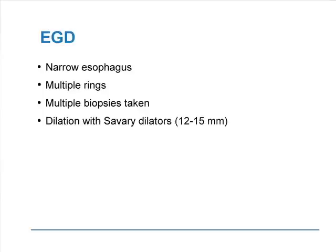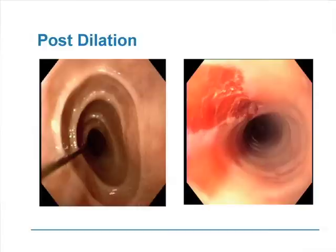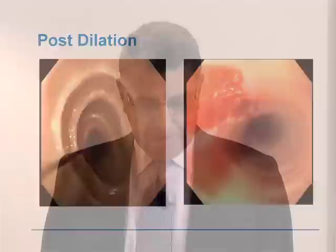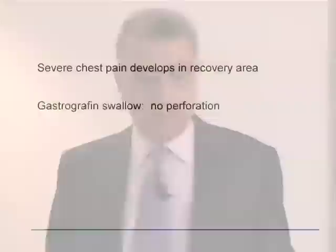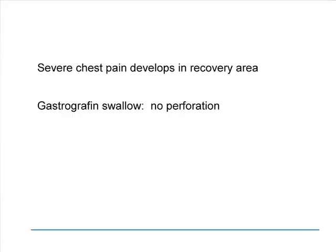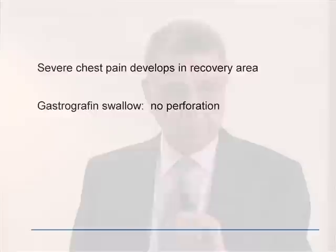Multiple biopsies are taken and the esophagus is dilated using Savary dilators from 12 to 15 millimeters. Post-dilation, on the left you have the guide wire still in place, and on the right after dilation you notice a superficial laceration or tear. The patient develops severe chest pain in recovery. Fortunately, a gastrografin swallow shows no perforation.